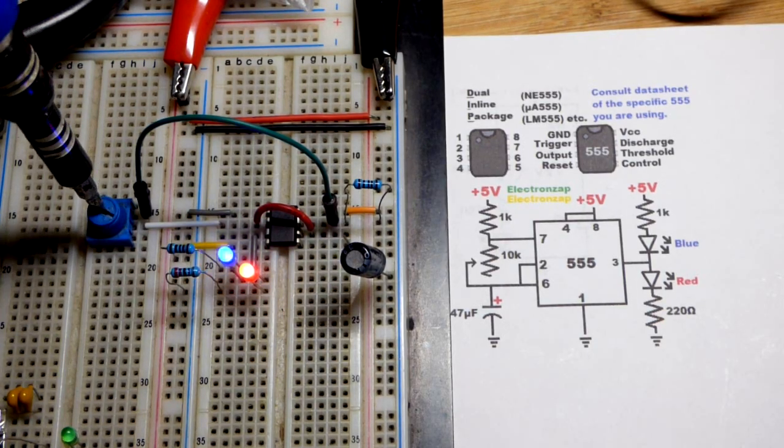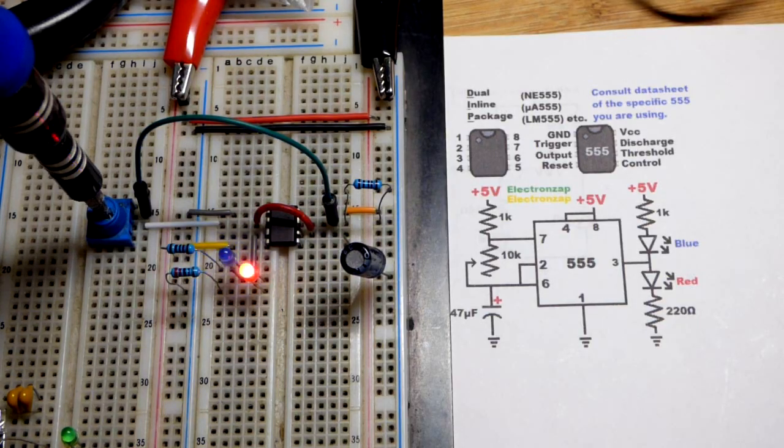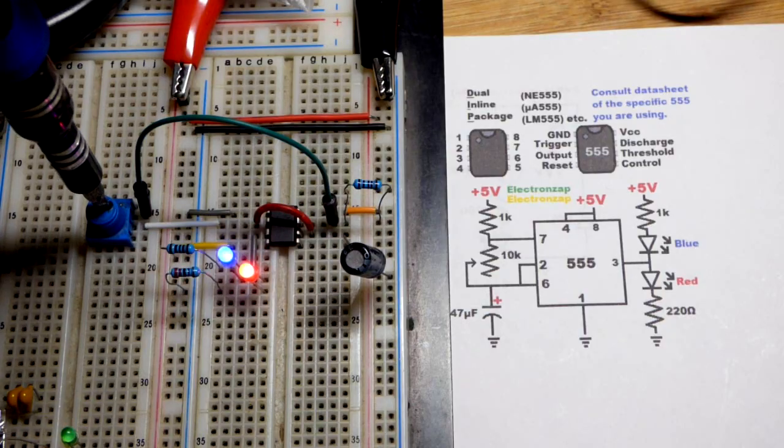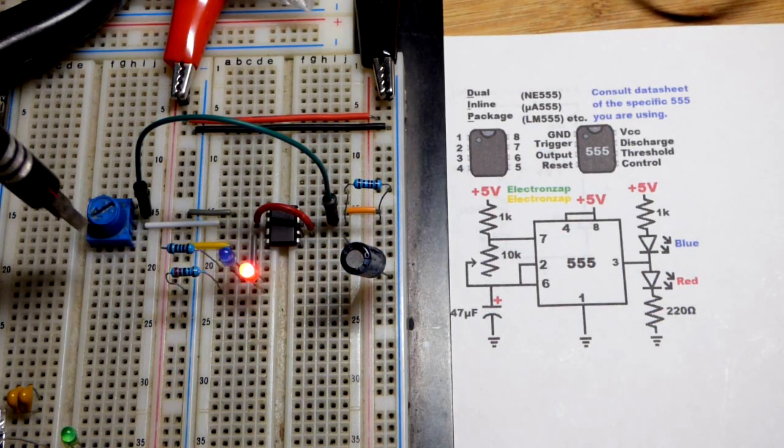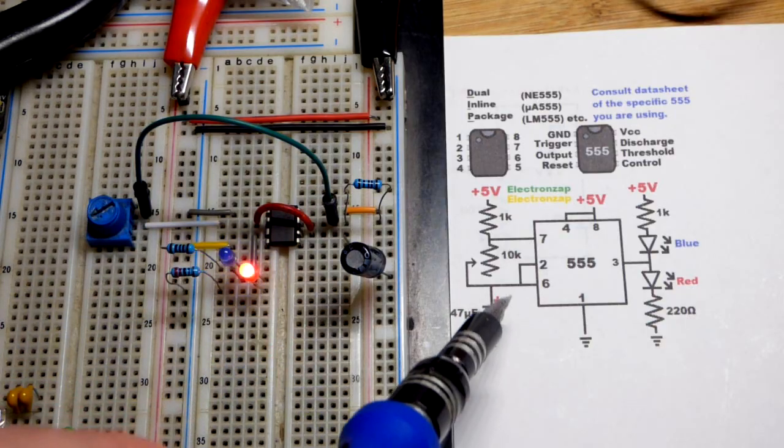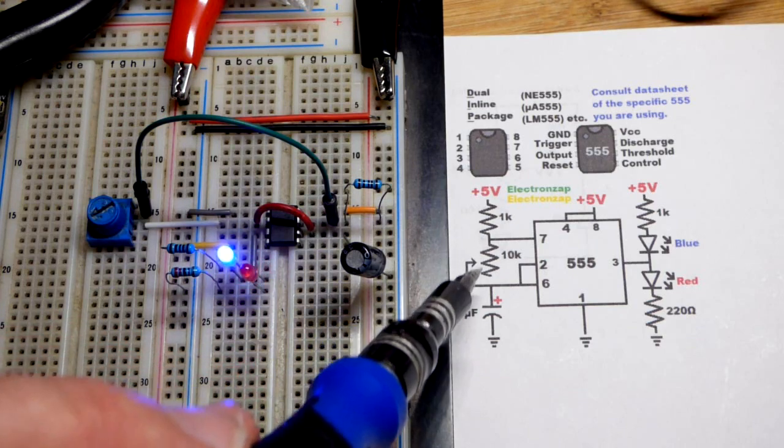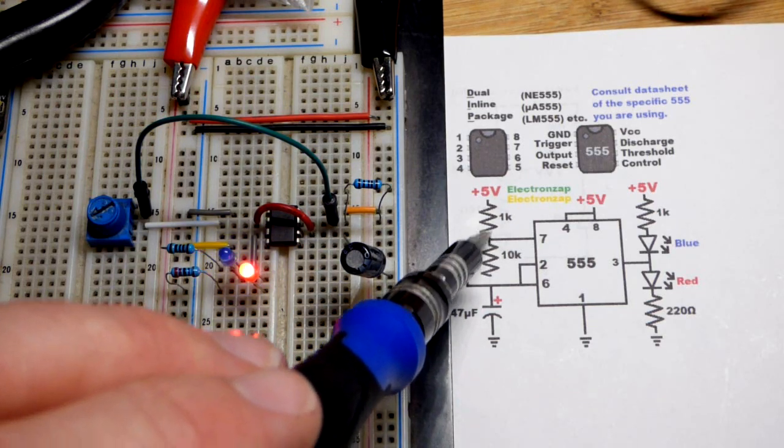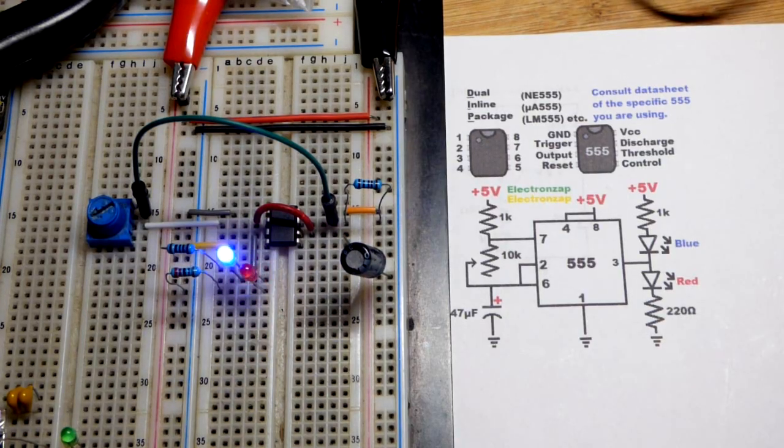But here you can see we can adjust the speed of the astable 555 timer right there because I got a trim pot. It's wired as a variable resistor though, not as a voltage divider. So we got a resistive element. One end of the resistive element is just floating in the air, it's not connected to anything. We got the wiper that slides up and down the resistive element and then one of the fixed points of the resistive element to the positive supply.